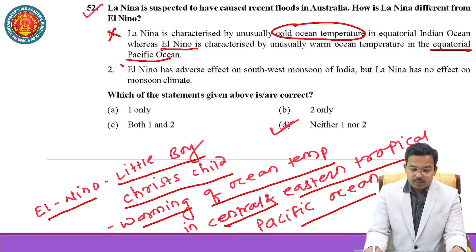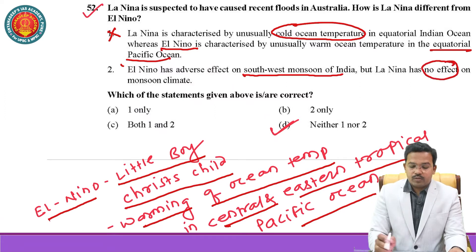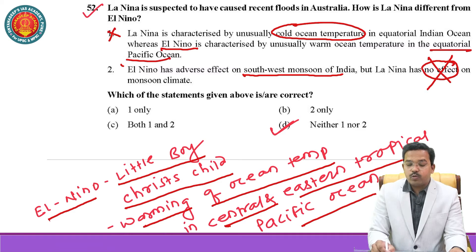Second option: El Nino has an adverse effect on the southwest monsoon in India — yes, that is true. But the option says La Nina has no effect, which is incorrect. Whenever La Nina occurs, India experiences very good rainfall. Here, each statement is half correct and half wrong, designed to confuse the student.